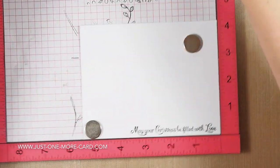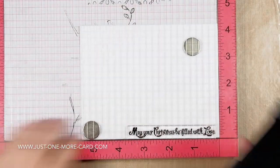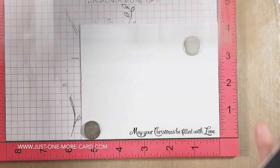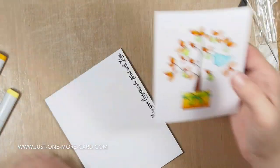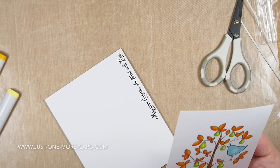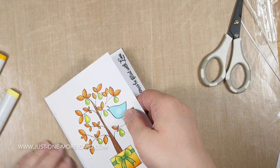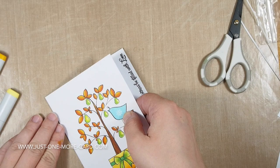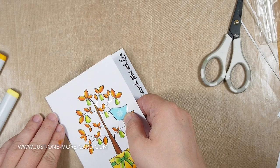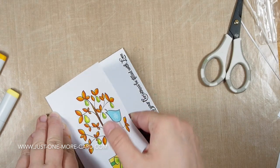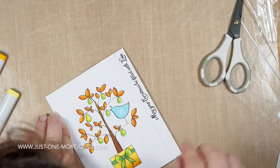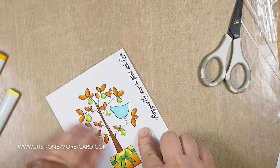This is one of the sentiments in the set and I'm using Versafine Onyx Black Ink to stamp it on the side of my card base here. I put a lot of adhesive on this panel and I'm going to adhere it now to my card base which is top folding. You can see the sentiment will be off to the side there. Just being very careful because the adhesive is quite strong so if I mess up I'm gonna have a problem.